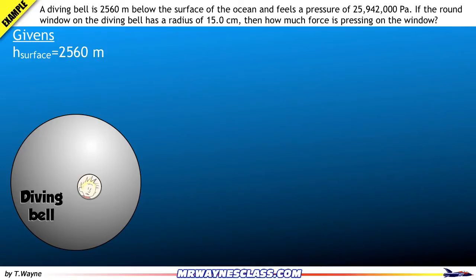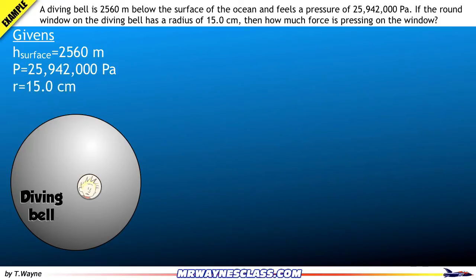It gives us the pressure because it says pascals, so that's 25,942,000 pascals. And it tells us the radius is 15 centimeters. But centimeters aren't a standard unit, so I'll divide by 100 to convert to meters. And finally, it's asking for how much force is pressing on the window.